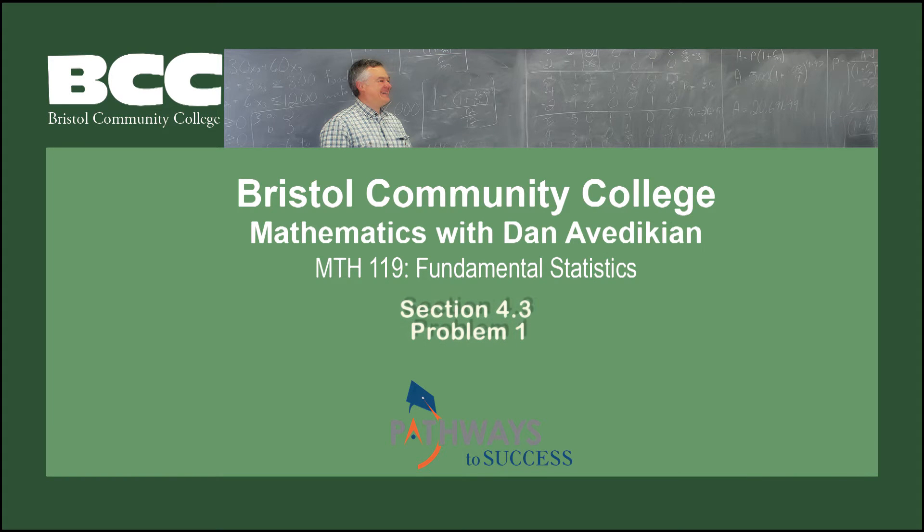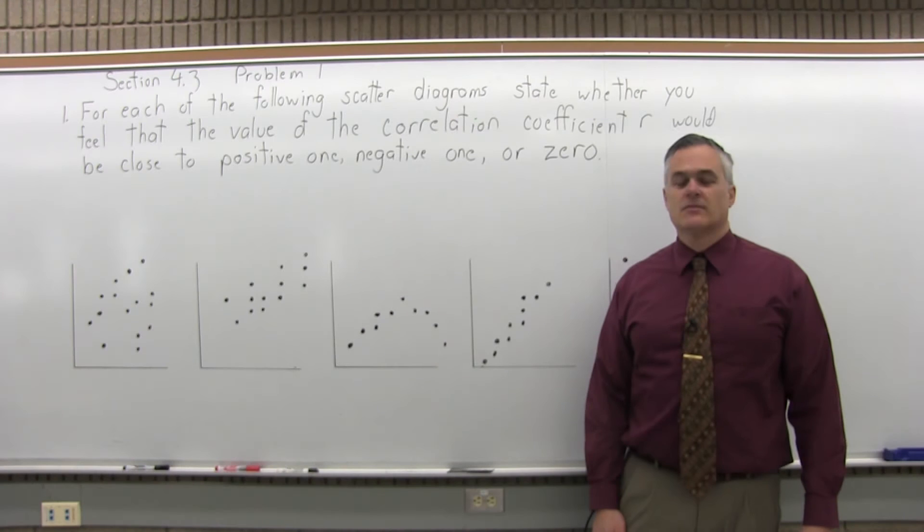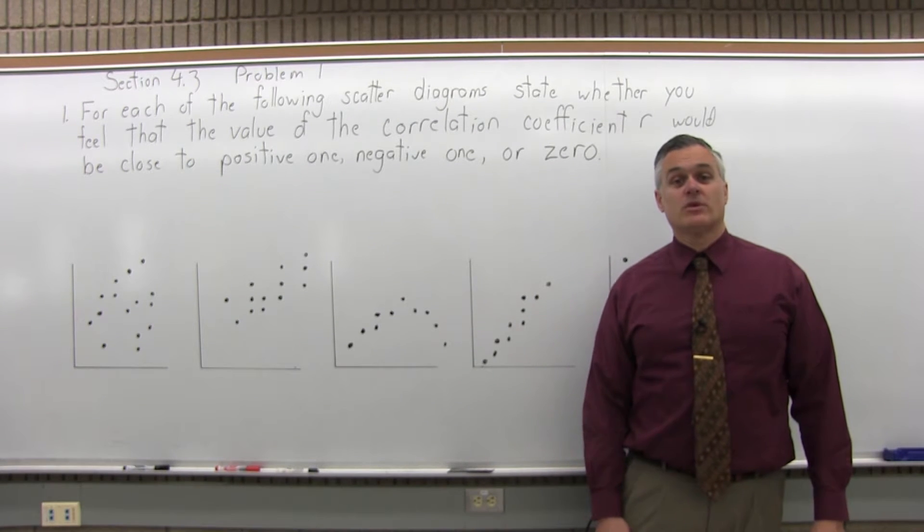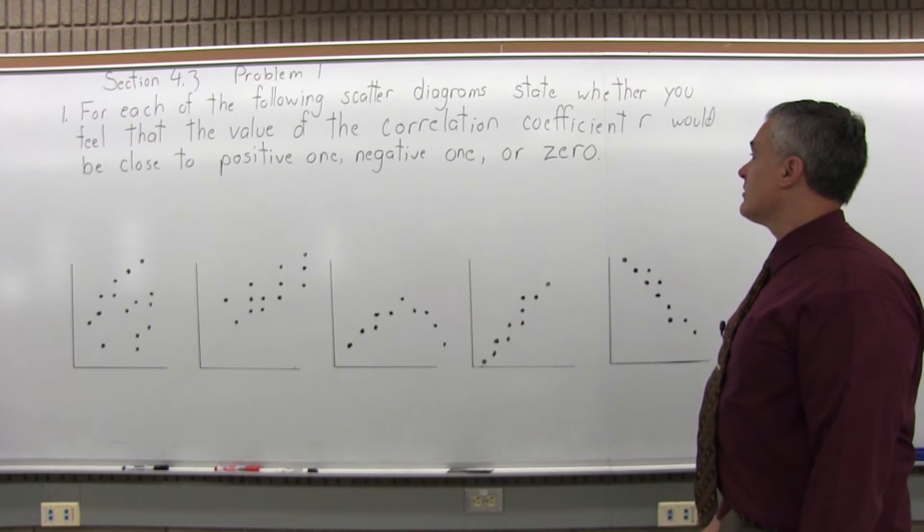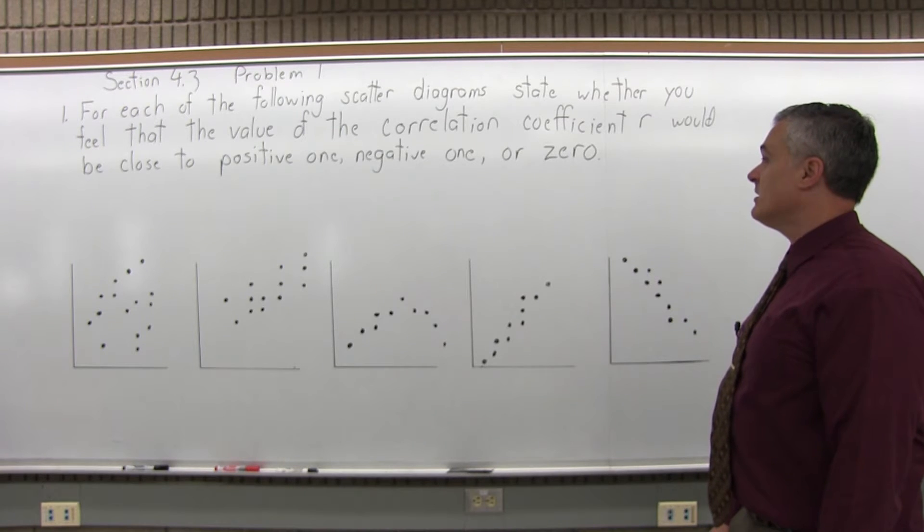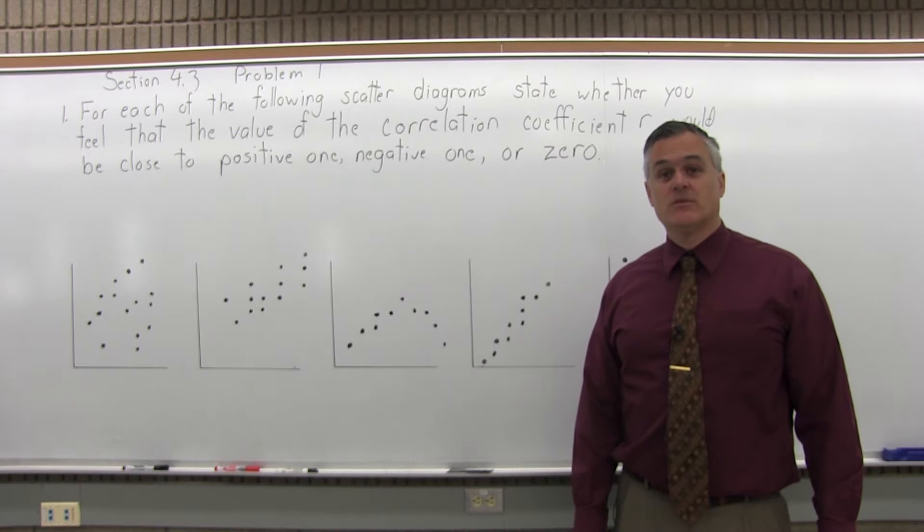Bristol Community College, Mathematics with Dan Avadikian, Math 119, Fundamental Statistics, Section 4.3, Problem 1. This is Section 4.3, Problem number 1. It says, for each of the following scatter diagrams, state whether you feel that the value of the correlation coefficient r would be close to positive 1, negative 1, or 0.